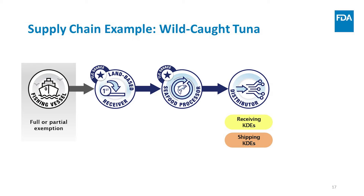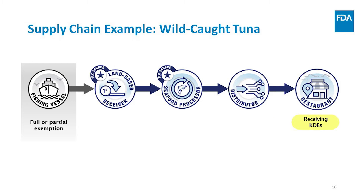Because the distributor is shipping the tuna steaks to a restaurant, the distributor must maintain key data elements related to the shipping of the tuna steaks to the next point in the supply chain, the restaurant. The distributor must also send many of the KDEs to the restaurant. The restaurant receives the repacked tuna steaks from the distributor, so the restaurant must keep receiving KDEs of the tuna steaks that they receive. Most of the information they need for these receiving KDEs will be sent to them by the distributor.